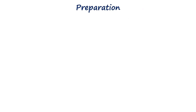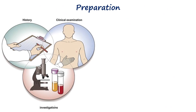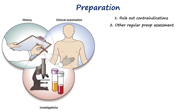Preparation for spinal anesthesia starts with taking a detailed history and performing a thorough examination to rule out any contraindications such as infection, bleeding disorders, or spinal deformities. Necessary investigations like hemoglobin, platelet count, coagulation profile, and ECG are reviewed to ensure the patient is fit for the procedure. The patient's fasting status is checked and the procedure along with its possible effects is clearly explained before obtaining informed consent.